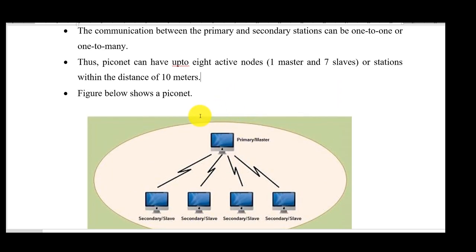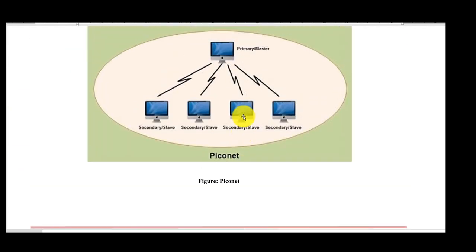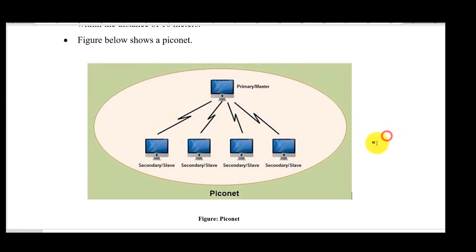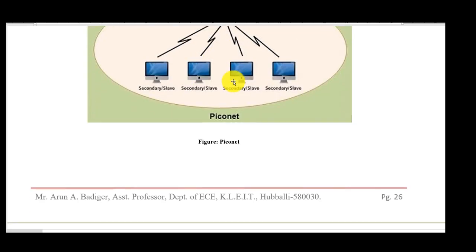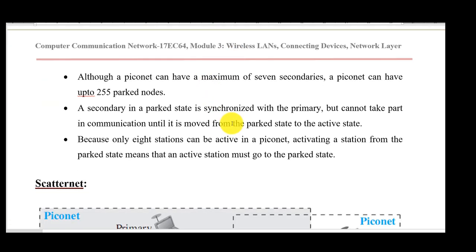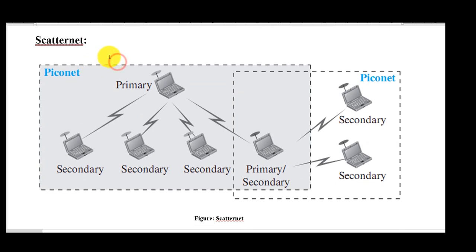The communication range from master to slave is 10 meters. Bluetooth pairing can be configured for up to 255 devices, but only seven slaves can be active at a time — the remaining devices must be in a parking (idle) state. Whenever another device wants to communicate, it gets activated and the others go to sleep. So a maximum of seven devices can be connected at once in a Piconet.